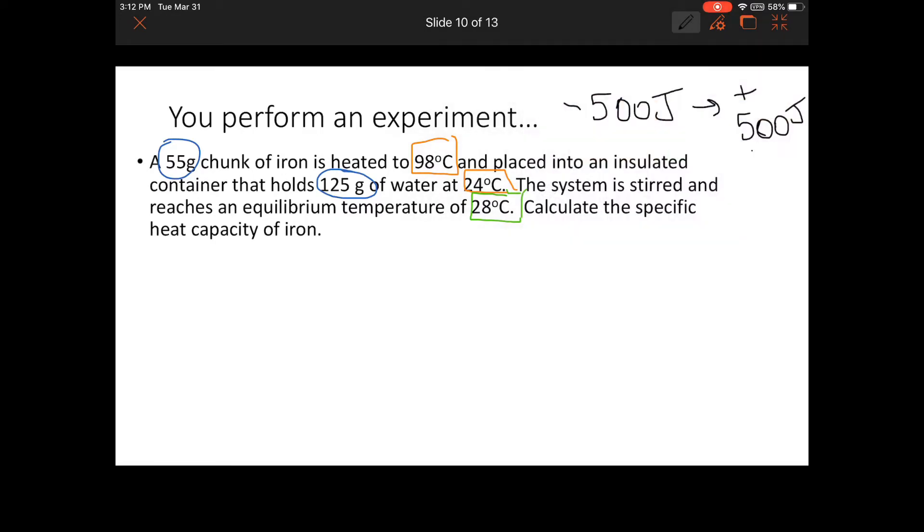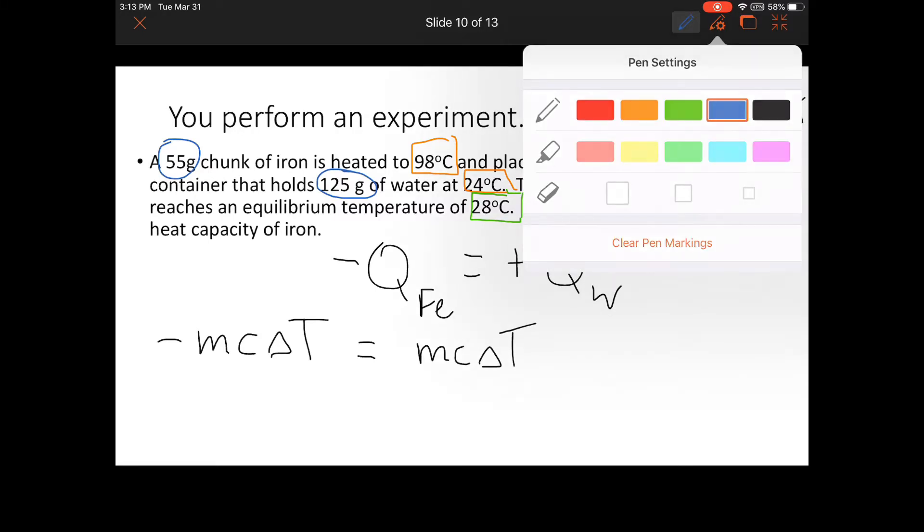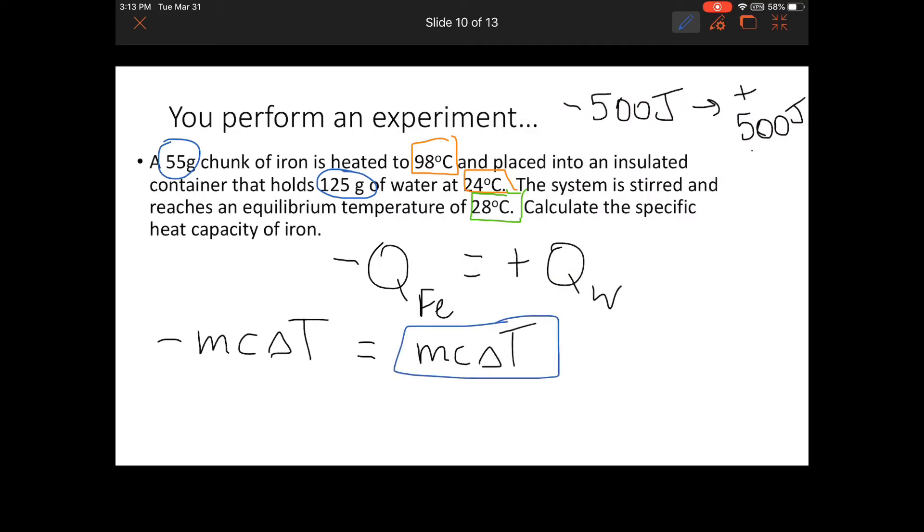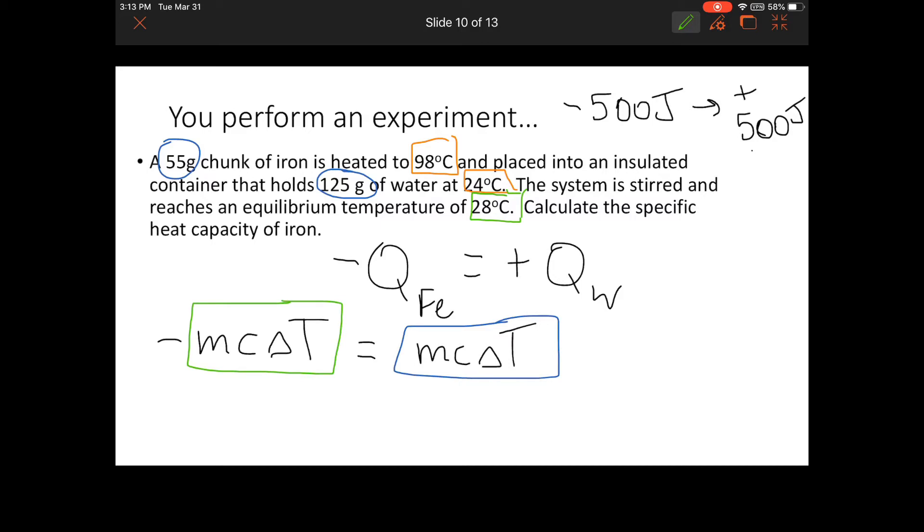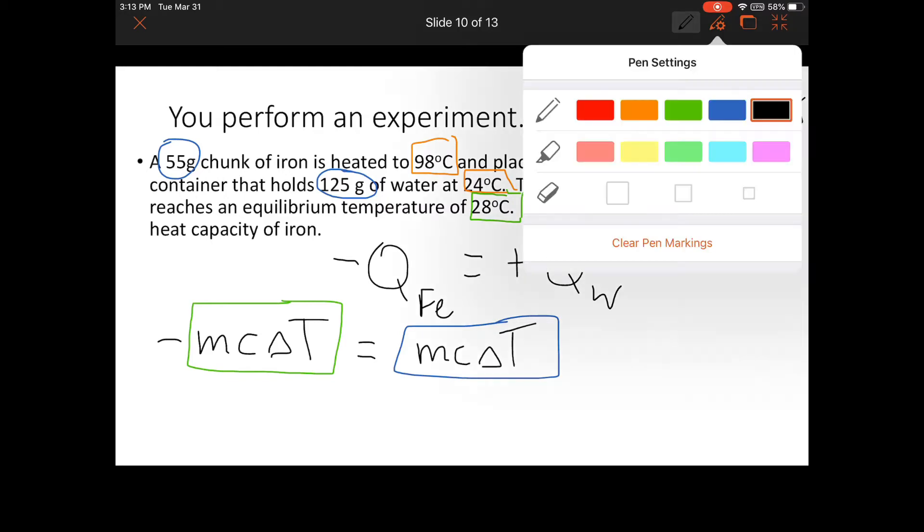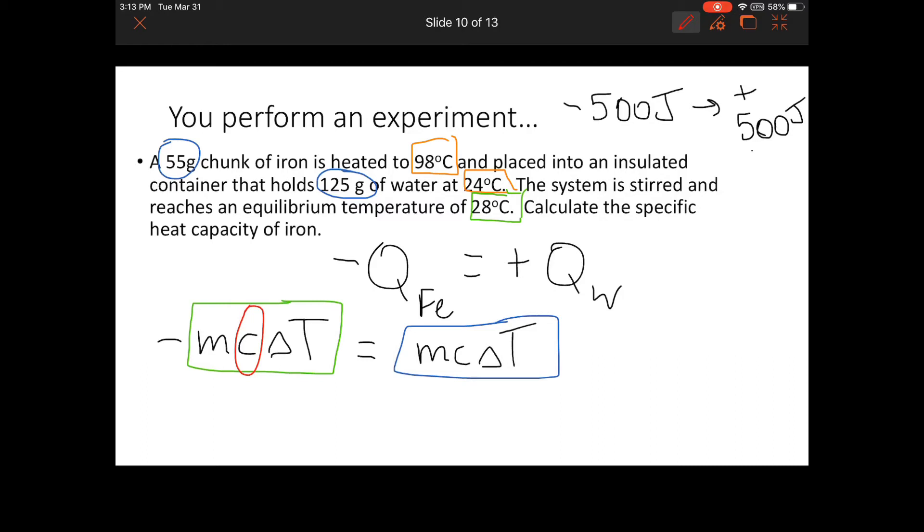Using the logic that energy lost by the iron must be gained by the water, I can figure out the energy gained or lost by the iron, and that must equal the energy gained or lost by the water with the opposite sign. This is my water, the energy gained by the water, and because it has a negative value, this is energy lost by the iron. I have all the required information except the specific heat capacity of iron.